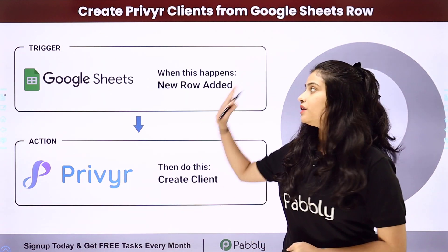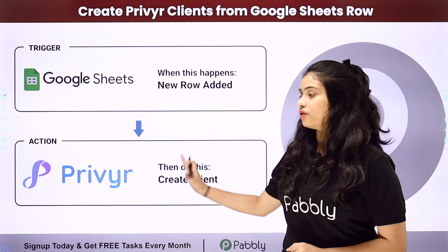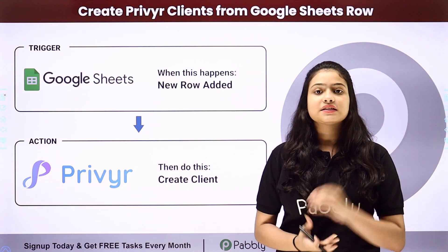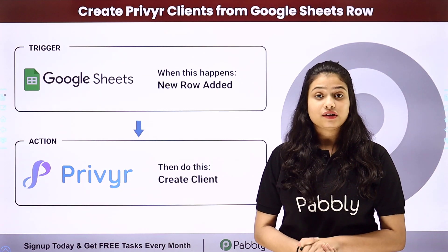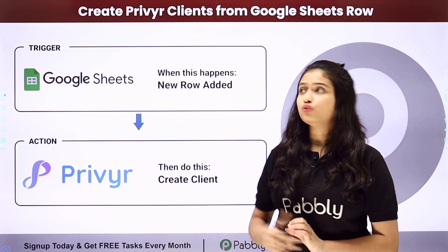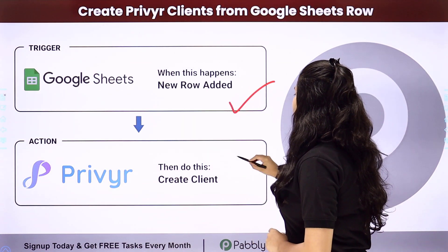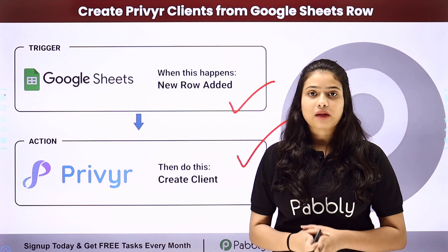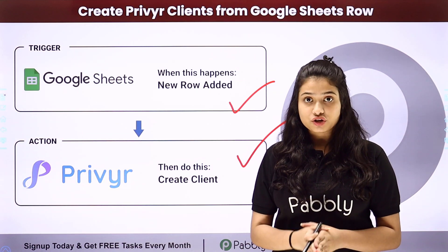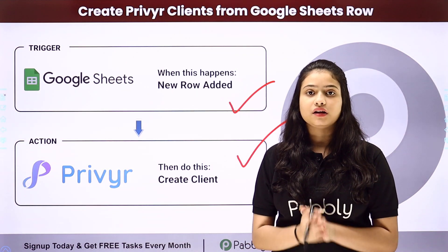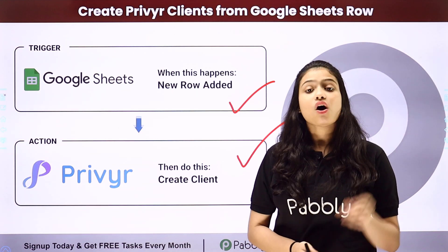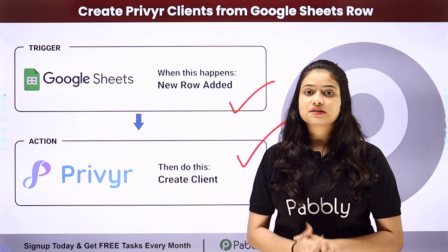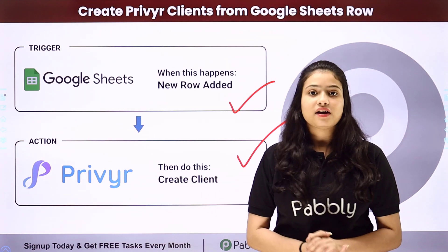For that we will have to integrate Google Sheets with Previer, and for that we are going to use Pabbly Connect, which is an amazing automation and integration software. We have Google Sheets in our trigger and Previer in our action. We will be connecting both of them using Pabbly Connect so that whenever a new row is added in our Google Sheets, automatically a new client is going to be added in our Previer account.